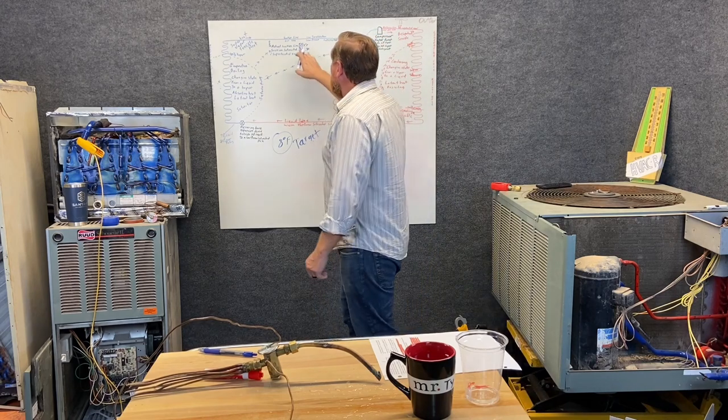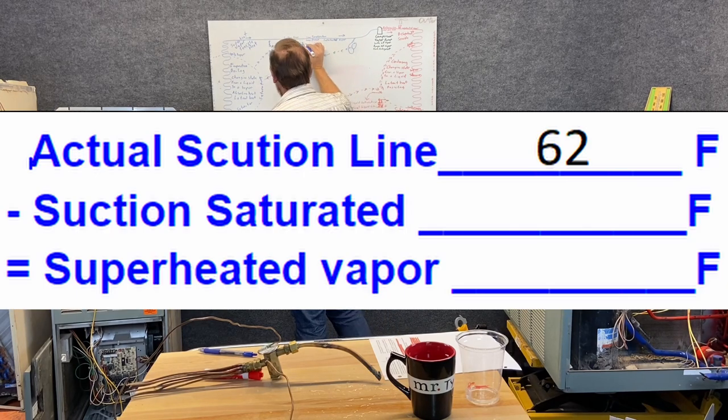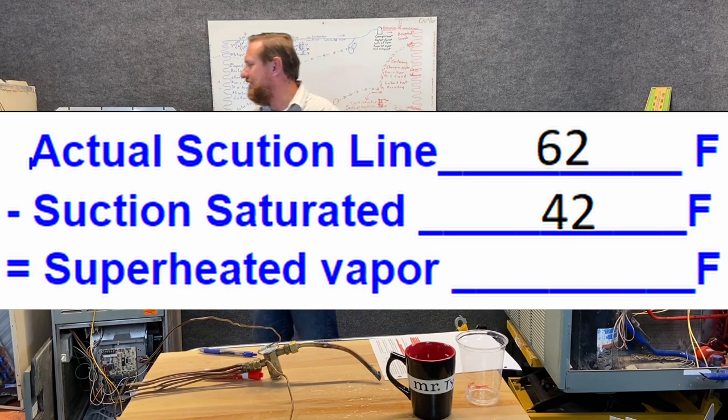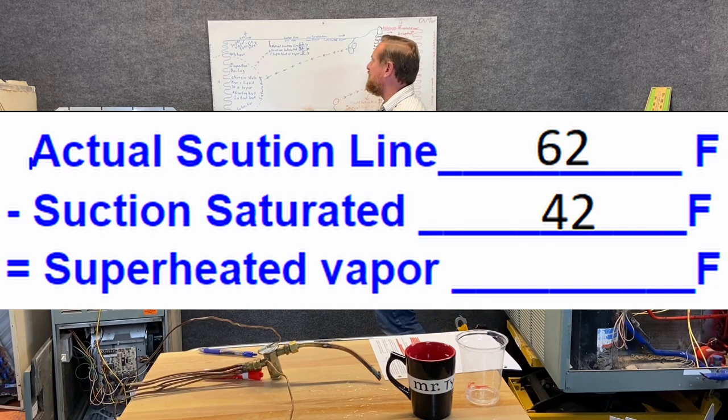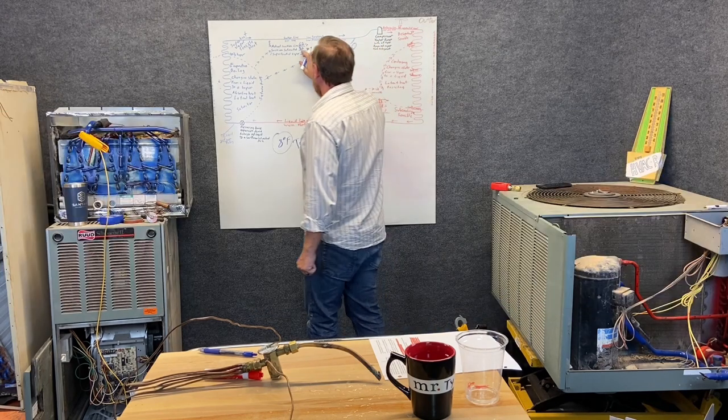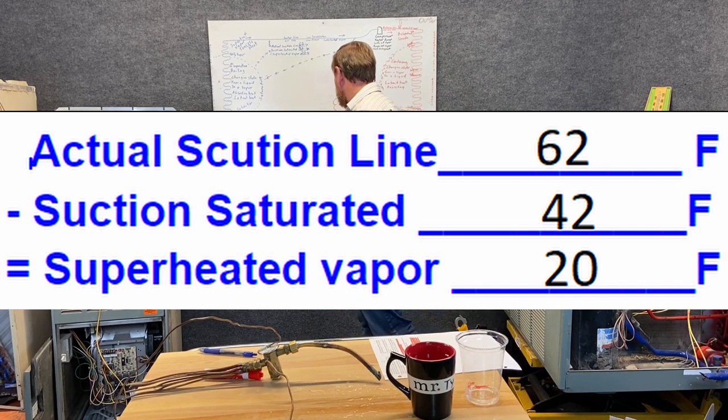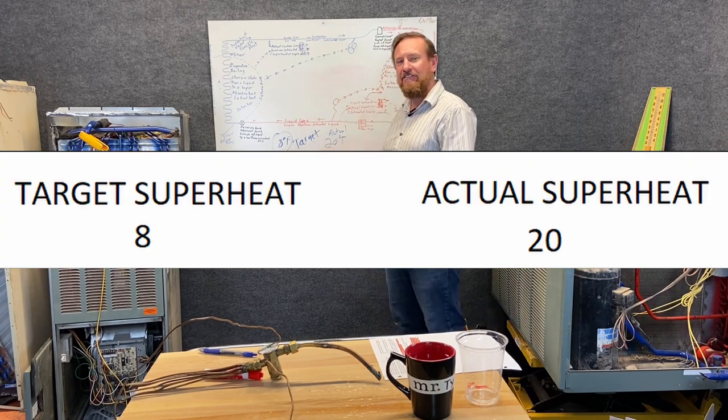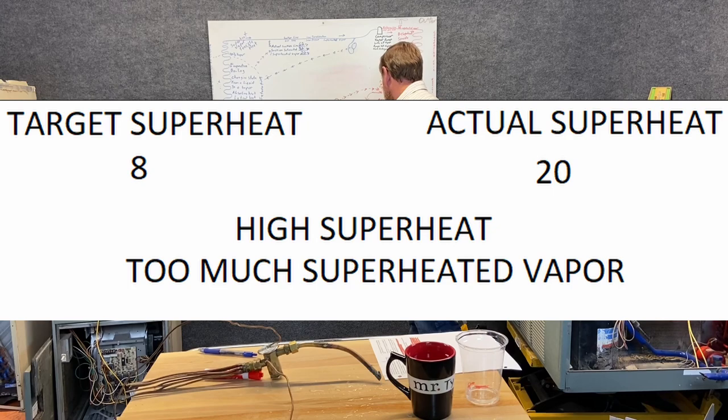Let's say that our suction line temperature was a different number. Let's say our suction line temperature was 62 degrees Fahrenheit. So if we take our PSIG converted to temperature, it's still at 42. But if we take our actual suction line temperature, it rose to 62. Well, if we take actual suction line temperature, 62, minus our suction saturated temperature of 42, we end up with a superheated vapor of 20 degrees Fahrenheit. That's outside of any of our range. So our superheat comes out to be 20 degrees Fahrenheit actual. That's much higher than our target of eight. This is called high superheat, high superheated vapor.